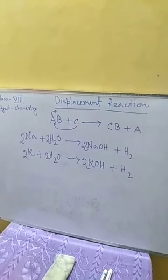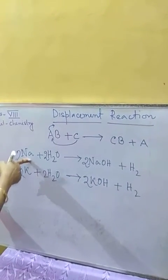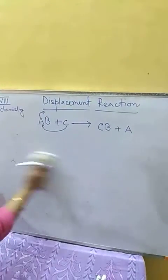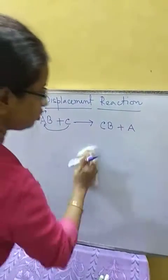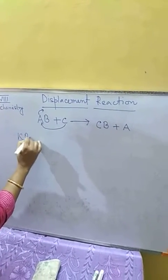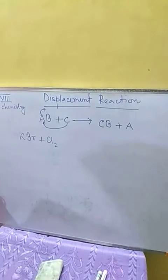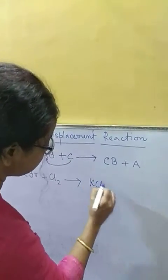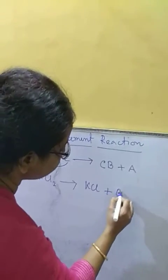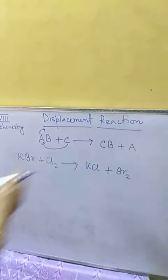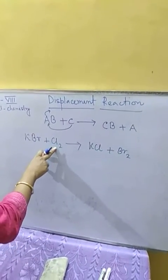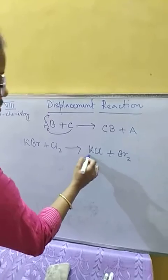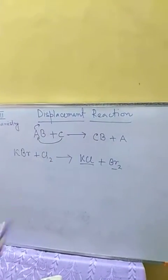Non-metals can also show displacement reactions. Since chlorine is more reactive than bromine, if we take the compound potassium bromide (KBr) and react it with chlorine, chlorine will displace bromine and take its place to produce potassium chloride (KCl), while bromine is released.